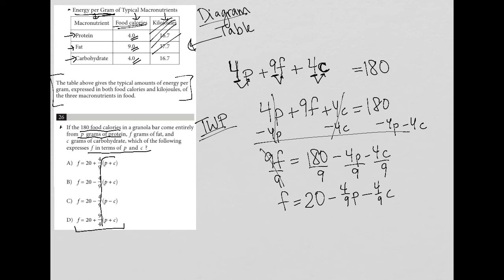In fact, all of my answer choices have P and C together, which means I can pull out this common factor here. So I'm going to say this is 20 minus 4 ninths parentheses P,